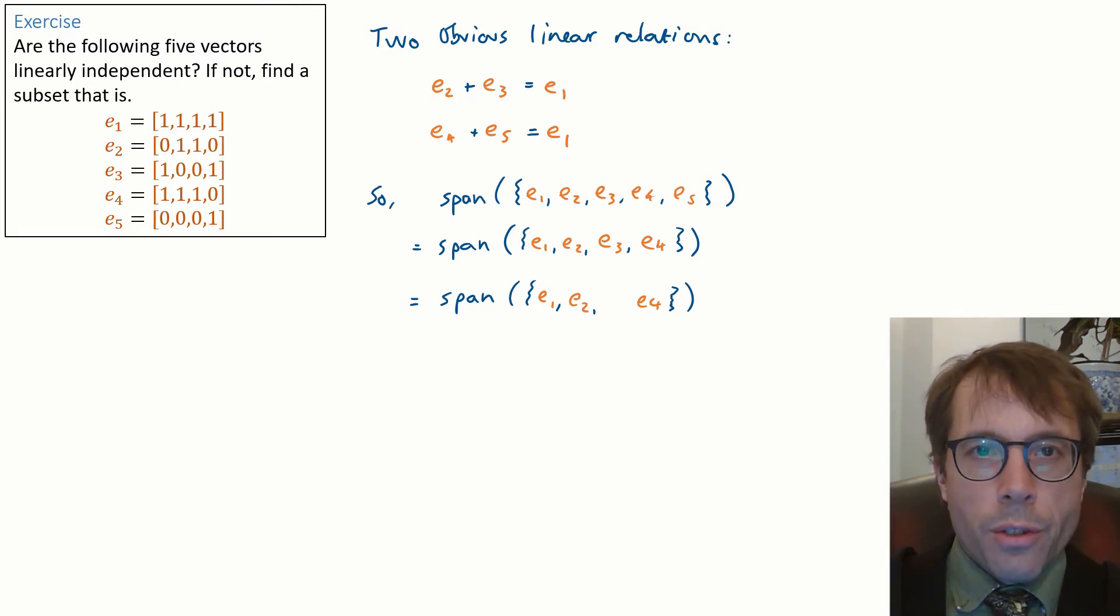Okay so now I've reduced down to three vectors and the span is still the same as the original span. Let's test if these three are linearly independent.